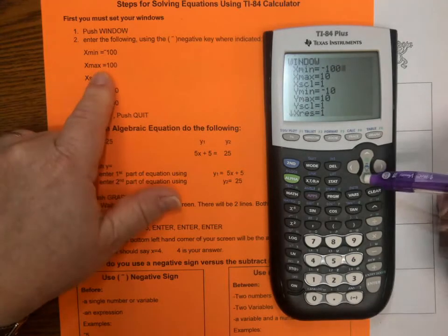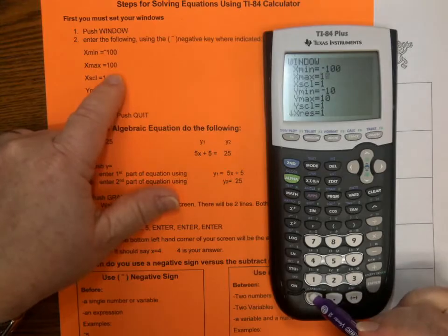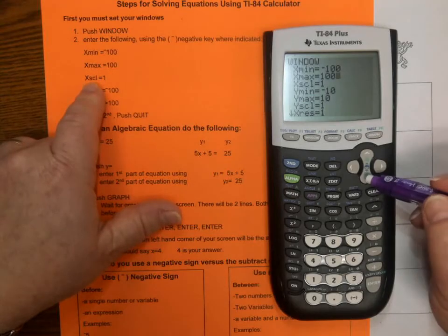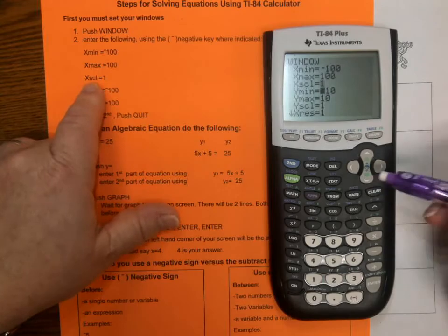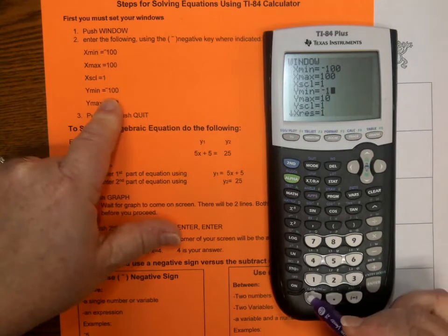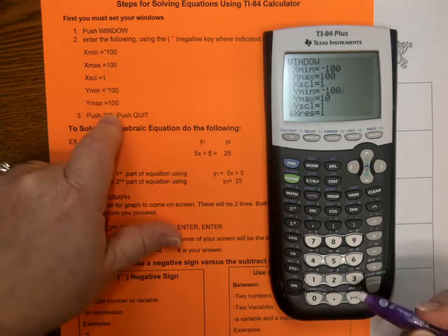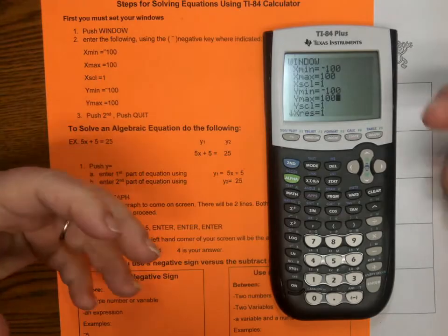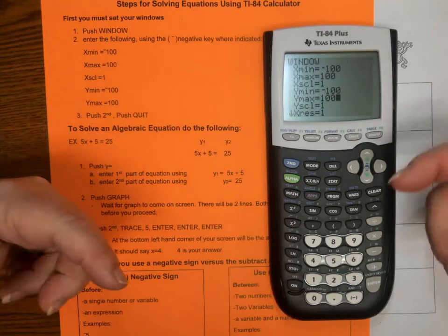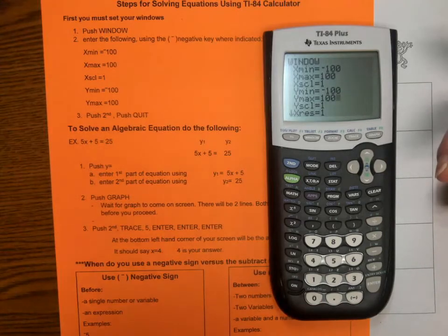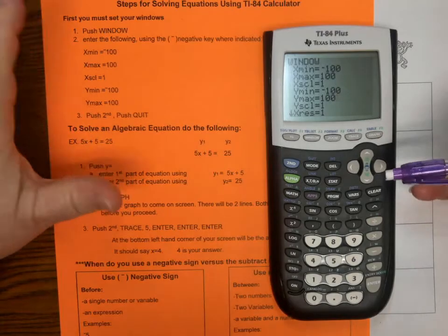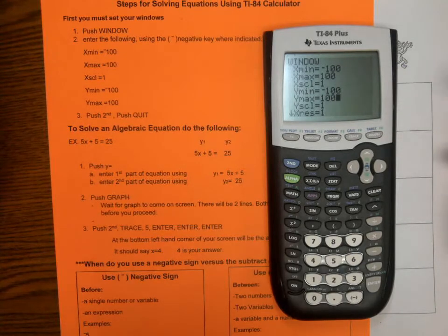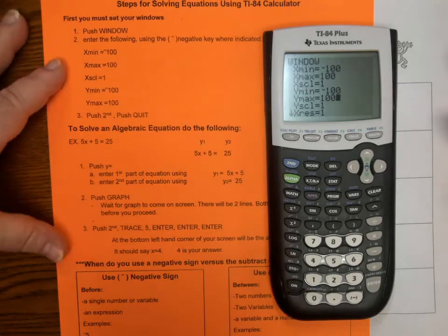X minimum, we need to do negative 100. Then, we're going to arrow down. X maximum, we're just going to enter 100. And then, we're going to leave this X S C L at 1. And we're going to put Y minimum, negative 100. And Y maximum is 100. If your windows are not set to include your answer choice, then you will get an error. That's why we've determined in 8th grade math, we've rarely seen anything over 100. That's why we ask you to set your windows at 100.